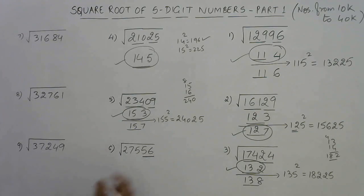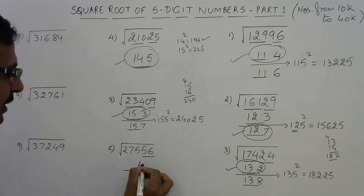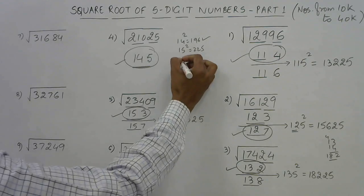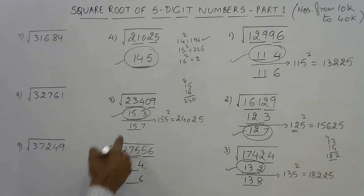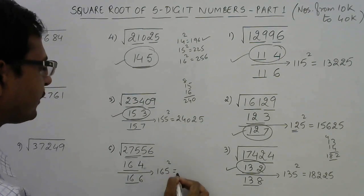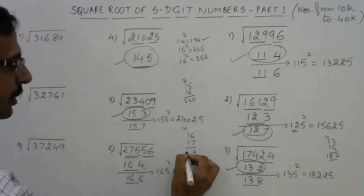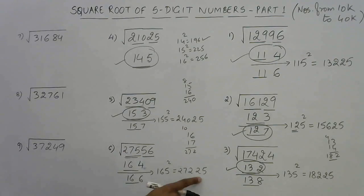Next, a number ending with 6: the answer ends with 4 or 6. The triplet is 275: 16² = 256 is just below 275 (17² = 289 is above), so 16 is the remaining part. Options: 164 or 166. Intermediate: 165². Find 16 × 17 = 272, append 25 → 27225. Since the original number is greater than 27225, the answer is the larger one: 166.